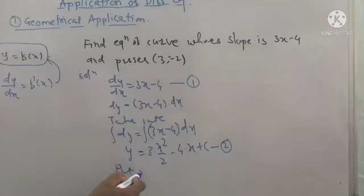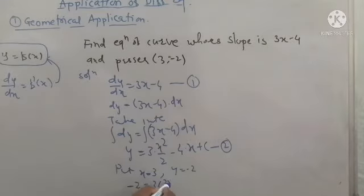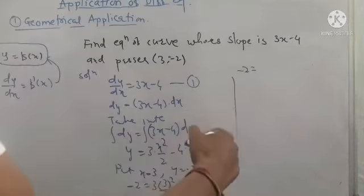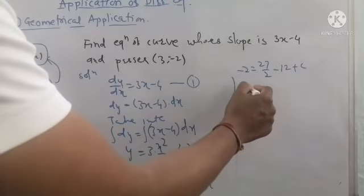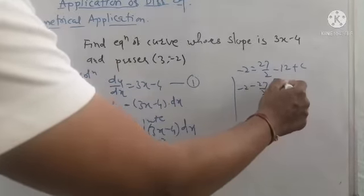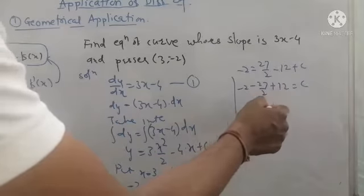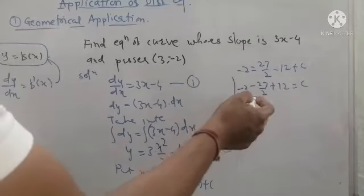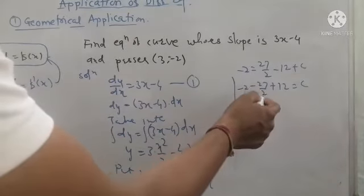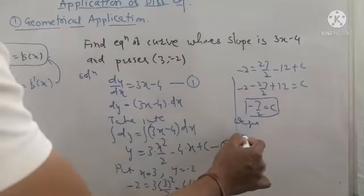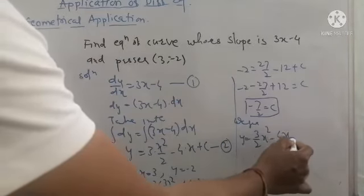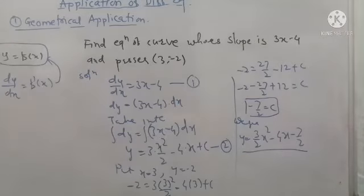The curve passes through (3, minus 2), so we substitute x = 3 and y = minus 2. We get: minus 2 = 3 times 9 by 2 minus 4 times 3 plus C, which simplifies to minus 2 = 27 by 2 minus 12 plus C. Solving, C = minus 7 by 2. Therefore the required equation of the curve is y = 3 by 2 x squared minus 4x minus 7 by 2.